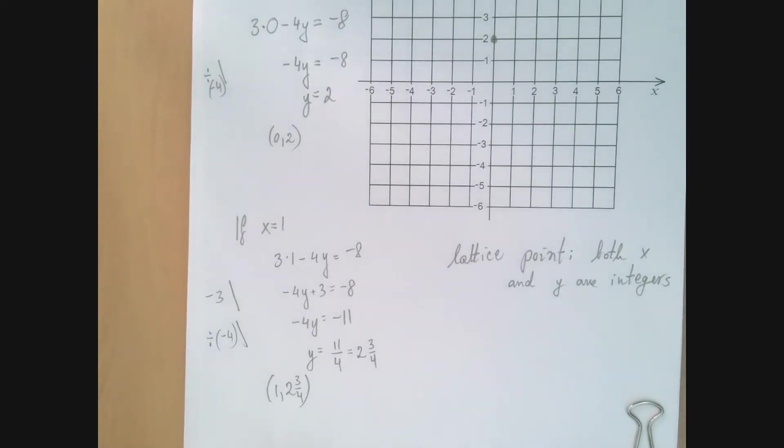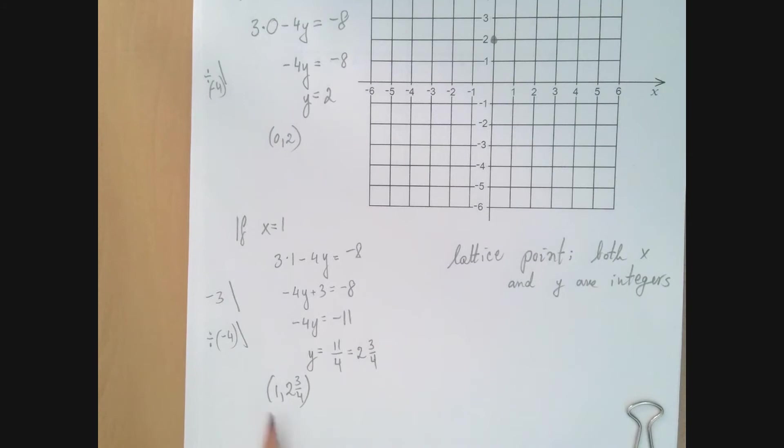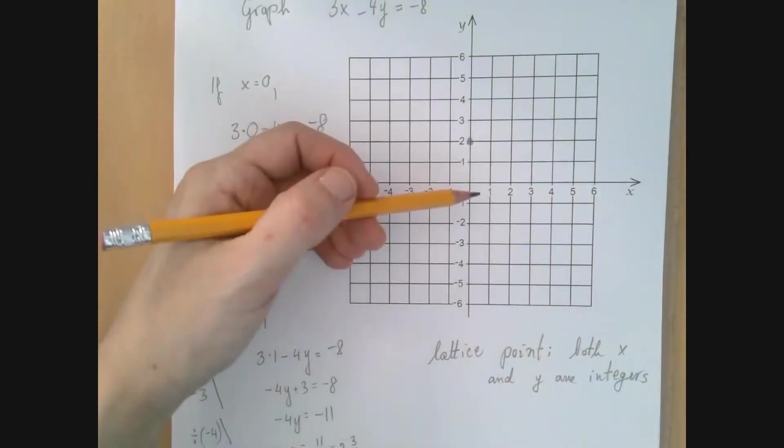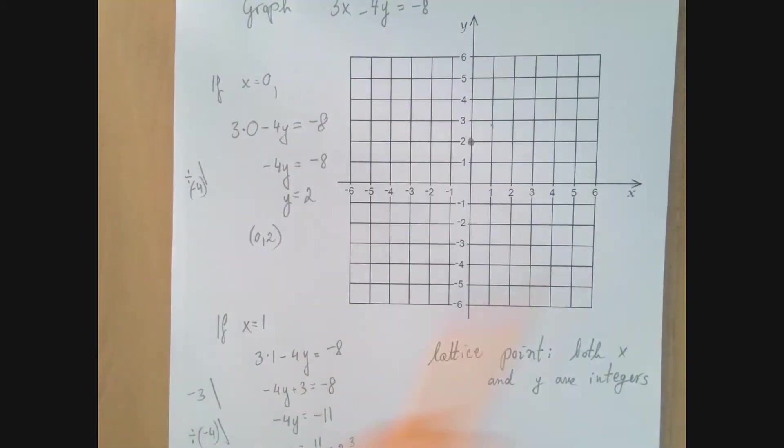This point is not quite useless. We can use it to check. This point is x equals 1, y equals almost 3, so somewhere here. We're going to see if the nicer lattice points will confirm the location of this point.